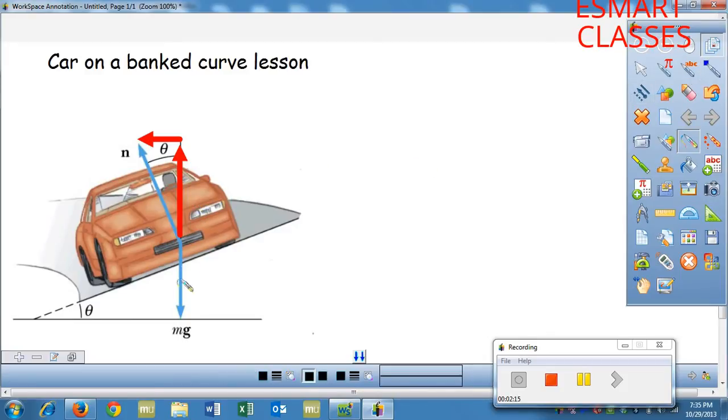If we break it up like that, we can see that since the car is neither going down or up, the sum of the forces in the vertical direction is zero, which basically tells us this vertical piece has to equal mg. This piece right here is mg.